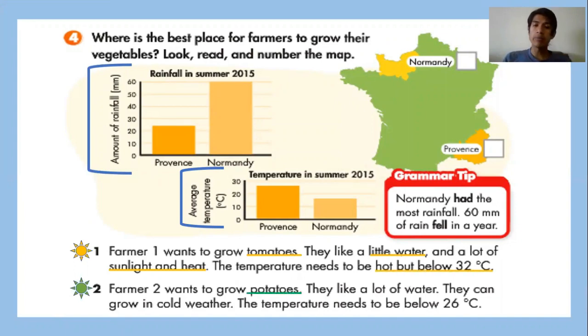And we have farmer number two. He wants to grow potatoes. They like a lot of water. They can grow in cold weather. The temperature needs to be below 26 degrees Celsius. And we have two countries: Normandy and Provence.